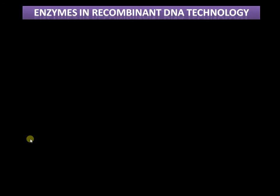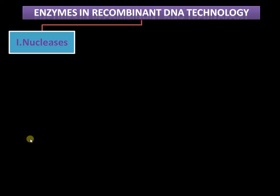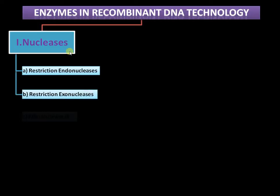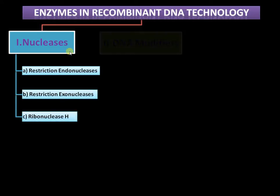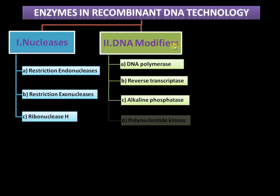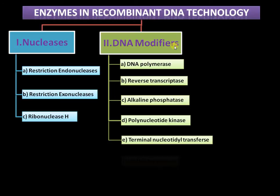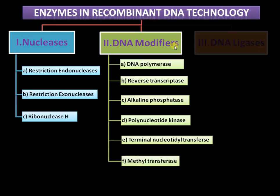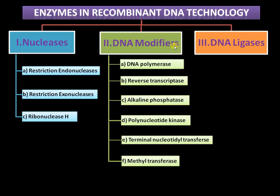Now moving into the enzymes in recombinant DNA technology. The first class is nucleases, which includes restriction endonucleases, restriction exonucleases, and ribonuclease H. The second class is DNA modifiers, which includes DNA polymerases, reverse transcriptase, alkaline phosphatase, polynucleotide kinase, terminal nucleotidyl transferase, and methyltransferase. Finally, the third class is ligases — enzymes that join two DNA molecules by formation of a phosphodiester bond, specifically DNA ligase.